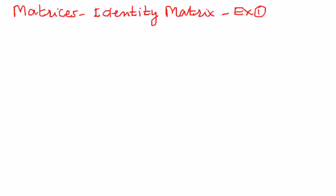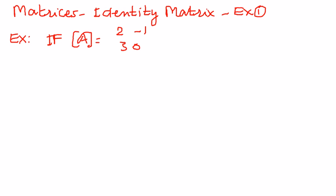In this example, let us say that if A is a matrix which has elements 2, negative 1, 3, 0, we want to find A to the power of 3.